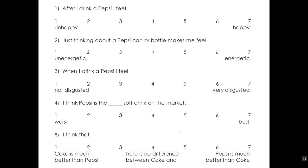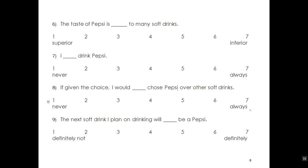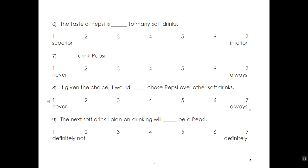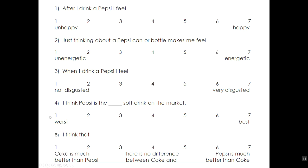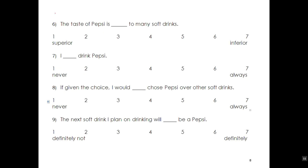Here we have the Pepsi scale, and we can see that we have three examples of one category, three examples of another category, and three examples of the third. I leave it up to you to decide which is which.